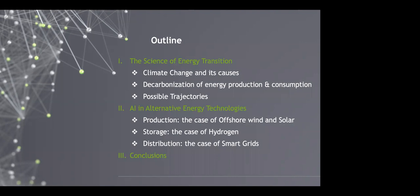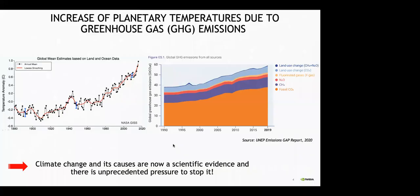I will start by discussing why energy transition, the science behind it, and where it stands in the climate change framework. In the second part, I will discuss the use of AI in different alternative energy technologies, with a special focus on wind and solar for production, the case of hydrogen for storage, and the case of smart grids for distribution.